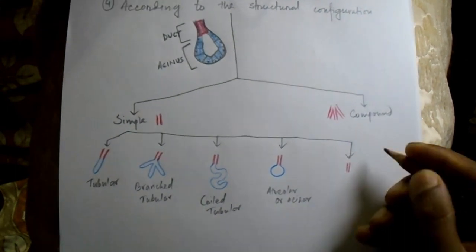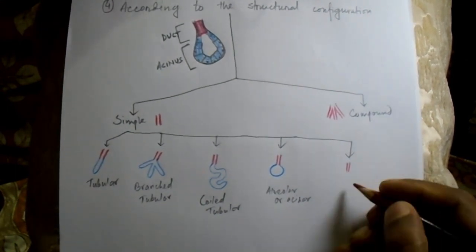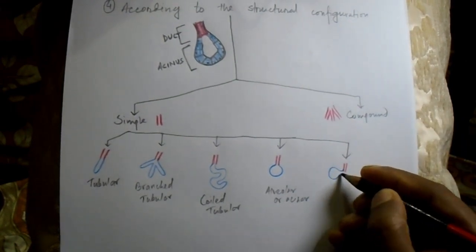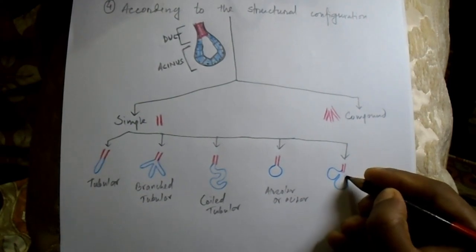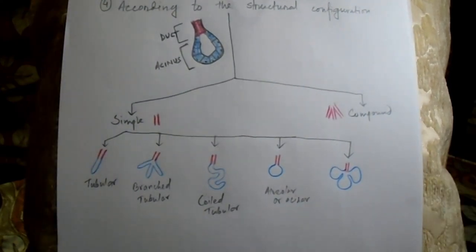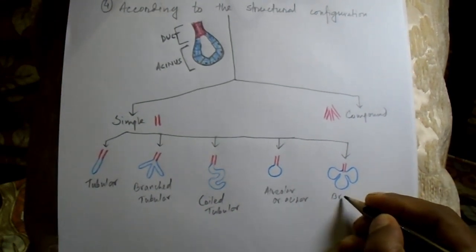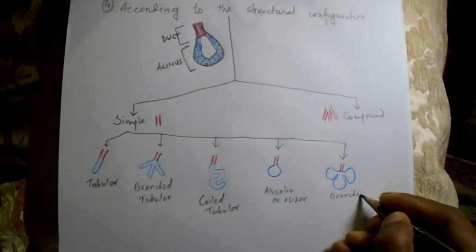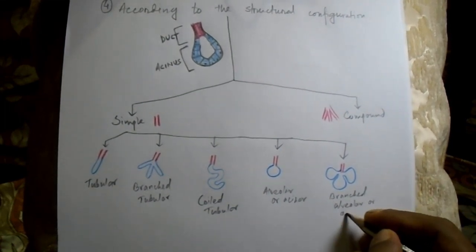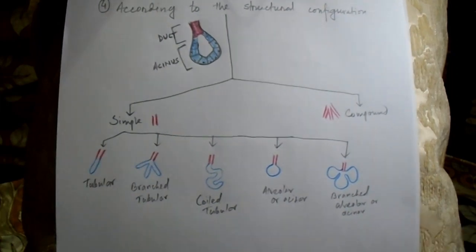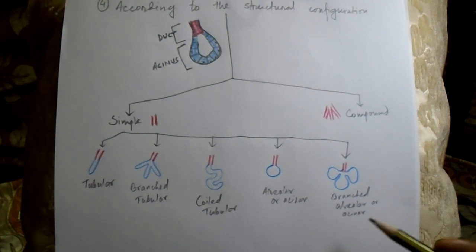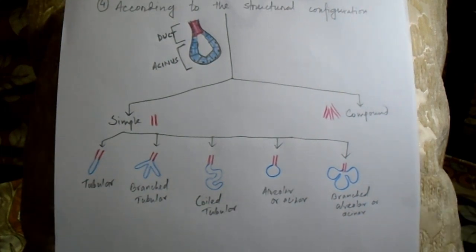The next subtype has an unbranched duct, the secretory part is acinar in shape, and branching is present in the secretory portion. This is termed simple branched alveolar or simple branched acinar gland. This gland is present in the sebaceous glands of the skin.